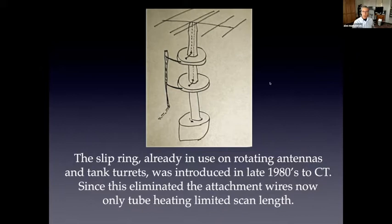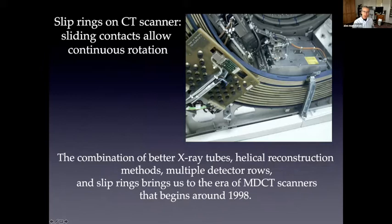So this is what the slip ring looks like on a modern CT scanner. So there are multiple rings and the contacts are in this panel. So you can rotate the tube indefinitely without worrying about wire wrapping. And remember, there's a lot of voltage going through these contacts. So this is a pretty sophisticated electrical and mechanical design.